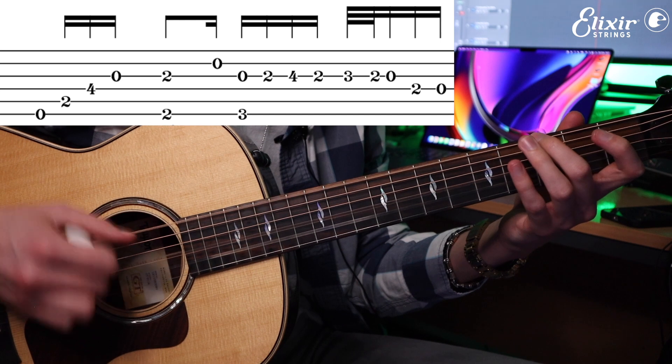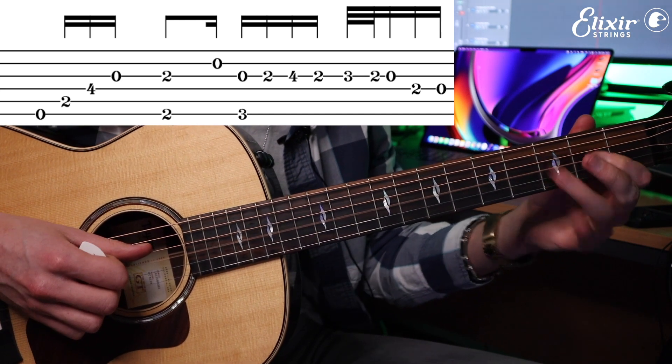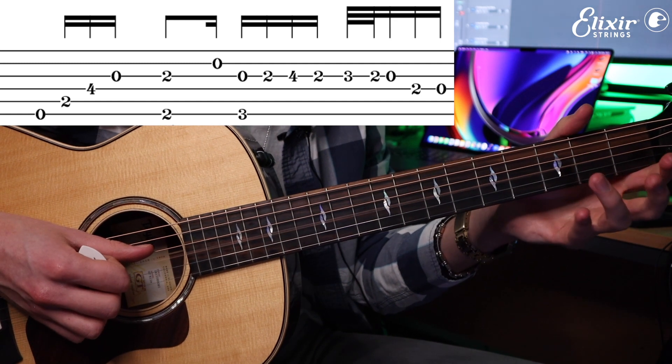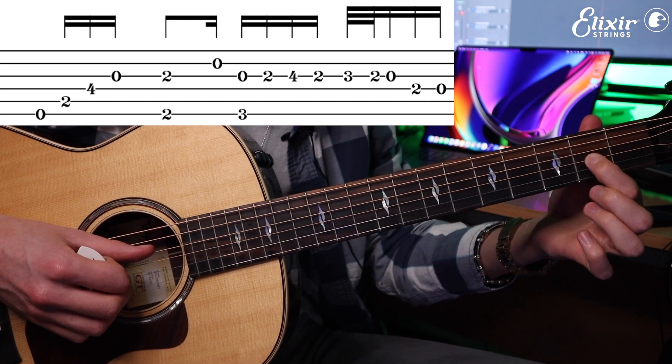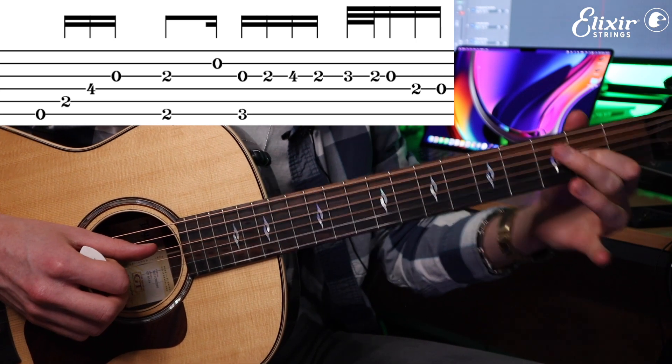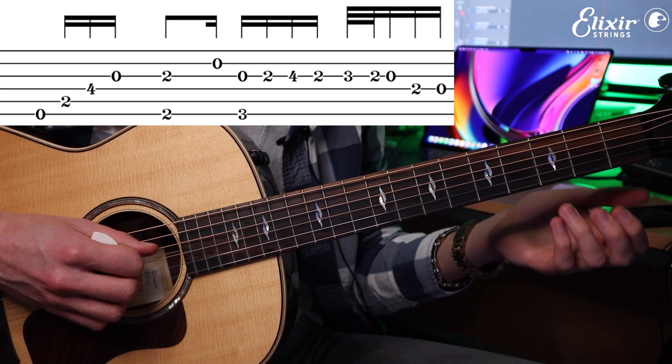Then we're going to hammer on from the zero two four, then two three two super quick. Pull that open and then two zero on the D string.